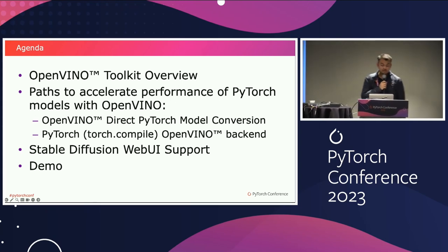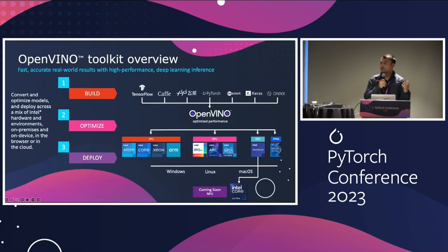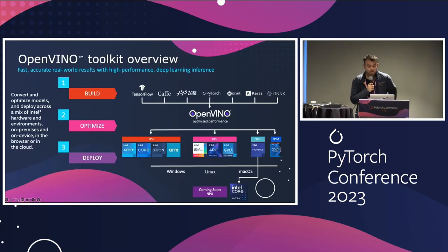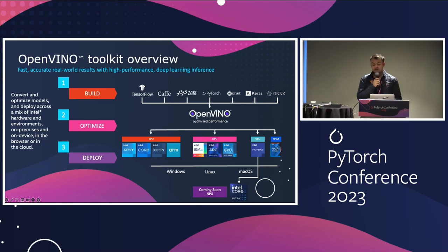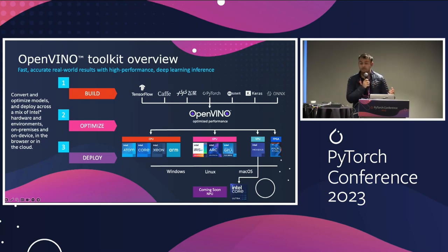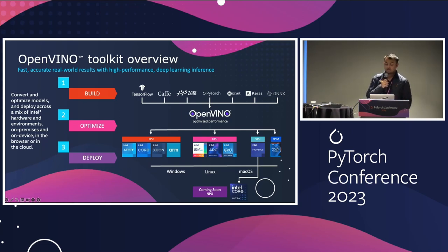Let's start off with a brief overview of what OpenVINO is. The Intel distribution of OpenVINO Toolkit is a tool suite for high-performance deep learning, targeted for faster, more accurate real-world results deployed into production across Intel architecture from edge to cloud.